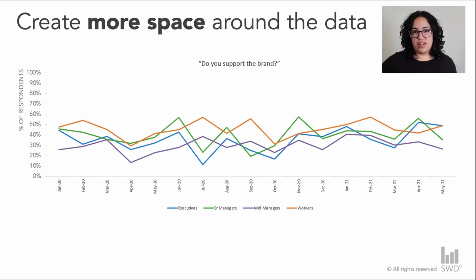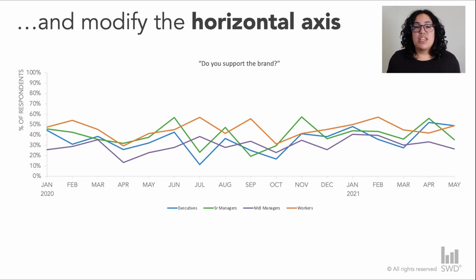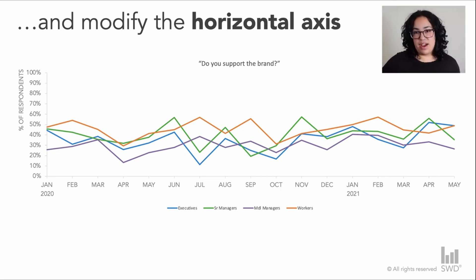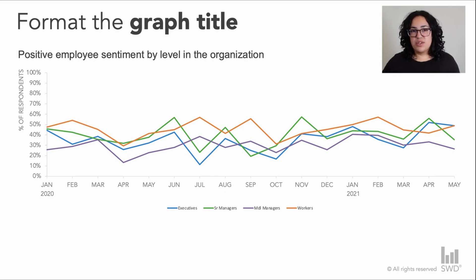Now that the vertical axis is cleaned up, I'll bring attention to the horizontal axis and make similar changes — making the labels bigger and easier to read by pulling the year out, which gives me space to put the monthly abbreviations flat along the axis. The final change to the outside of the graph is to format the title: going from center alignment to left alignment, making it bigger and a darker gray so it commands more attention. I've also added more descriptive text so that when you look at the graph, you know exactly what you're meant to see.